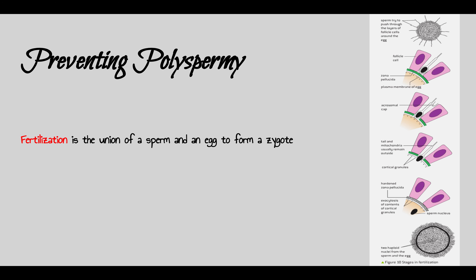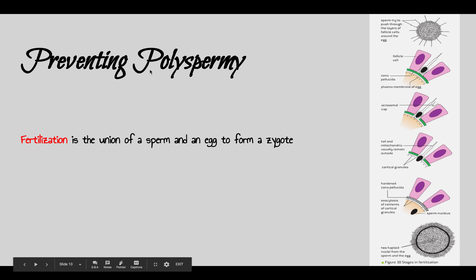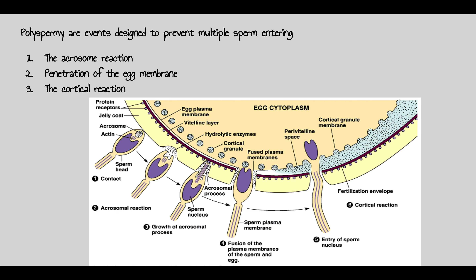Let's talk about polyspermy. For humans it is very unlikely to have more than one child per pregnancy. Identical twins or triplets happen but are uncommon. What's common is one fetus, one zygote, one embryo. We have a process called preventing polyspermy — 'poly' meaning many sperm — so that we have just one zygote after union of sperm and egg.